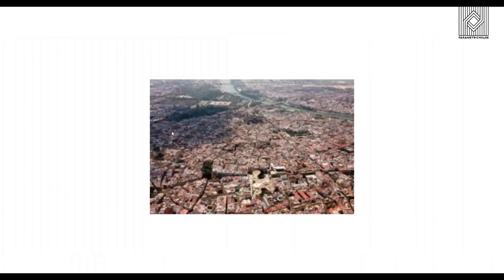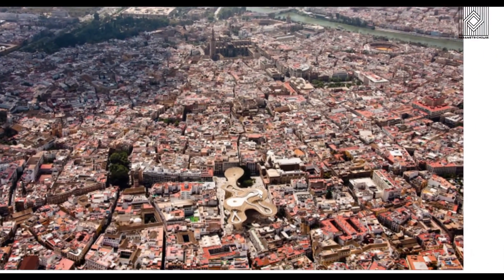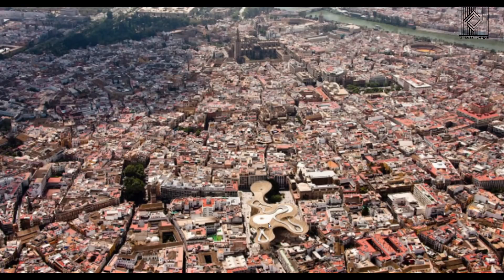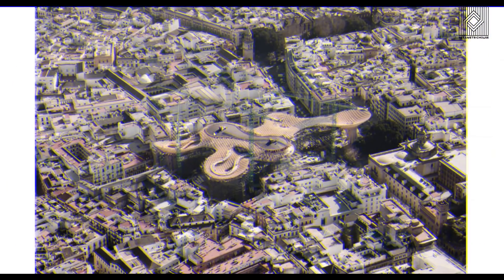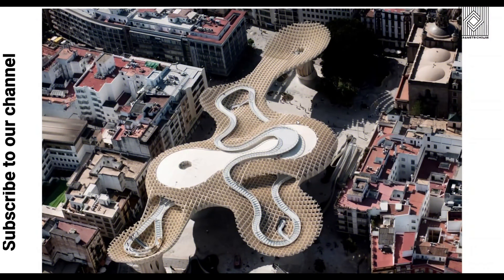This building, or structure, is the biggest wooden structure in the world. It's located in Seville, Spain, and was designed by a German architect called Jürgen Mayer. The building is 150 meters in length, 70 meters in width, and 26 meters high — these are the dimensions according to Wikipedia.